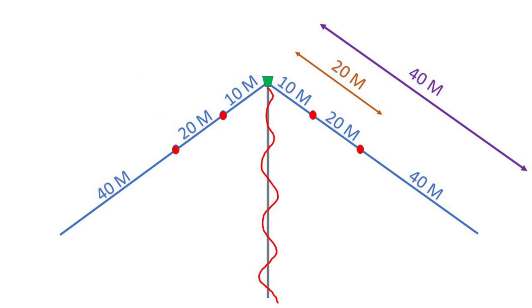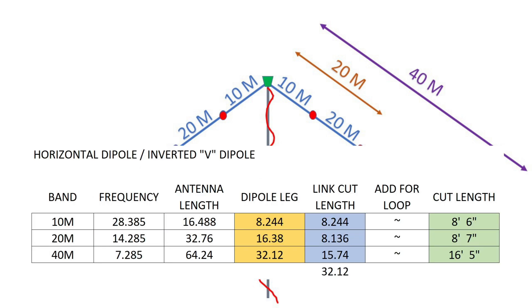You're going to have a length of wire for 10 meters, another length of wire that you add to get 20. 20 is coming from the combination of the 10 meter wire plus a second section to get you 20. And then a 40 meter section. You get 40 meters because you added the 10 meter section to the 20 meter section to the 40 meter section. But you have three individual cut lengths of wire. How long do you cut them?